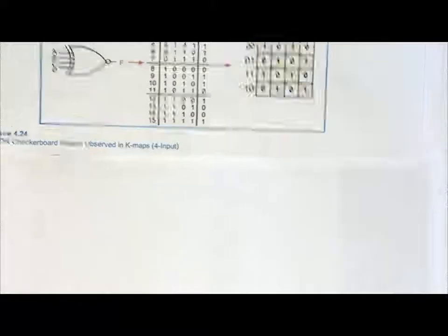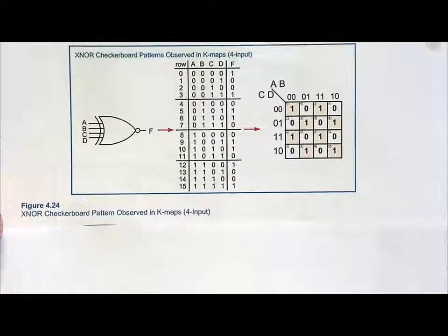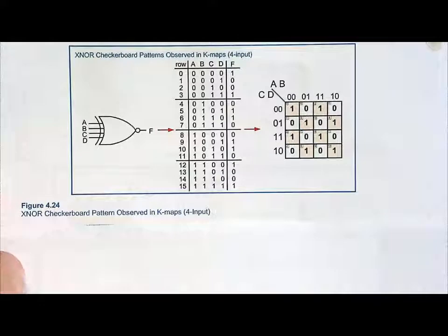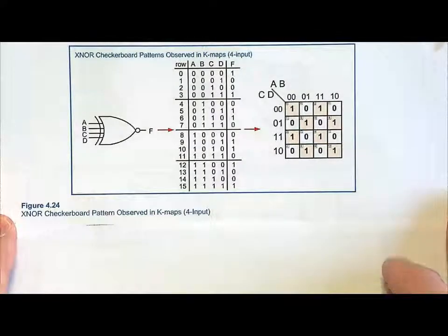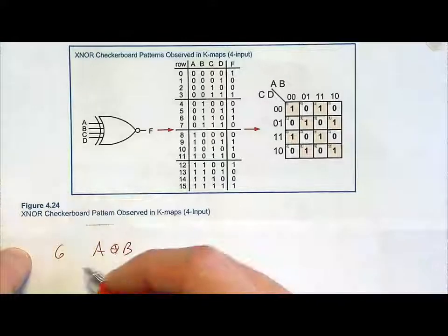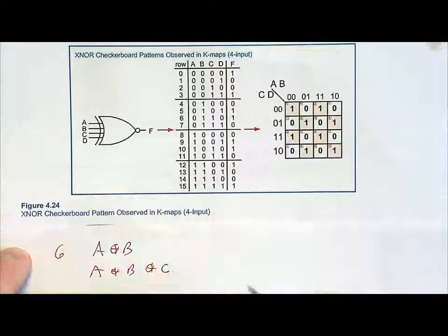Finally, a 4-input exclusive NOR gate looks like this. It's the same checkerboard pattern but with a different starting point. What's not shown here: we covered two 2-inputs, two 3-inputs, and two 4-inputs, so six total. We got things like A exclusive OR with B, and A exclusive OR with B exclusive OR with C, et cetera.